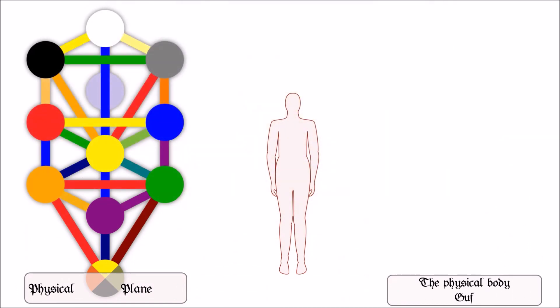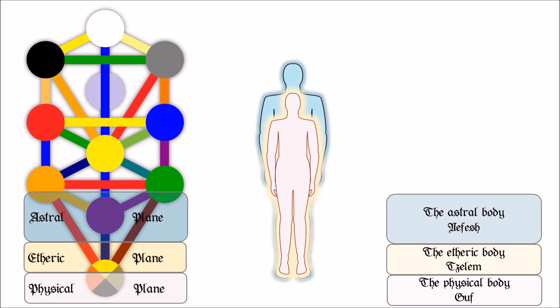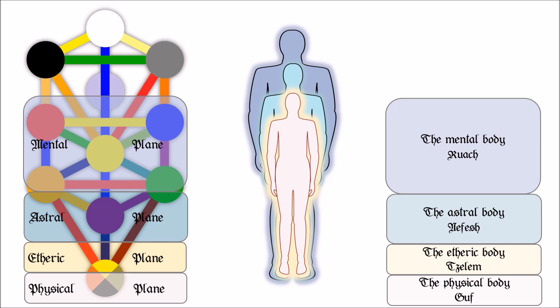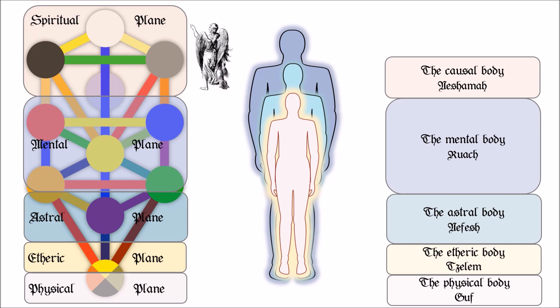We distinguish between several subtle bodies. The physical body corresponds to the gross realm of the material plane. The etheric body is the subtle realm of the material plane and is connected to the etheric aura. The astral body, the lower self or the emotional soul, is connected to the astral aura. The mental body, the individual self and also the higher consciousness, is connected to the mental aura. The causal body, the higher self or that part of our soul which is above or beyond our incarnations, is connected to the spiritual aura.